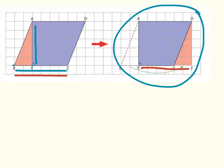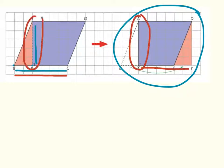AX is the width of the rectangle and is also the height of the parallelogram — it's the width of our rectangle here, but the height of our parallelogram here. So if we use B for our base and H for our height, the area of a parallelogram is simply equal to its base times its height.